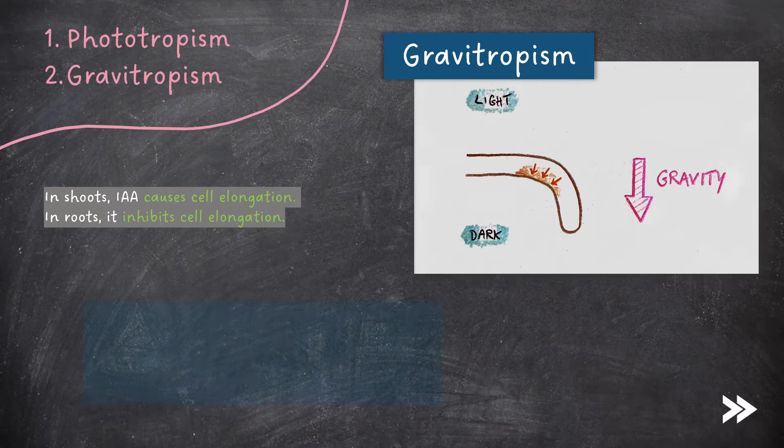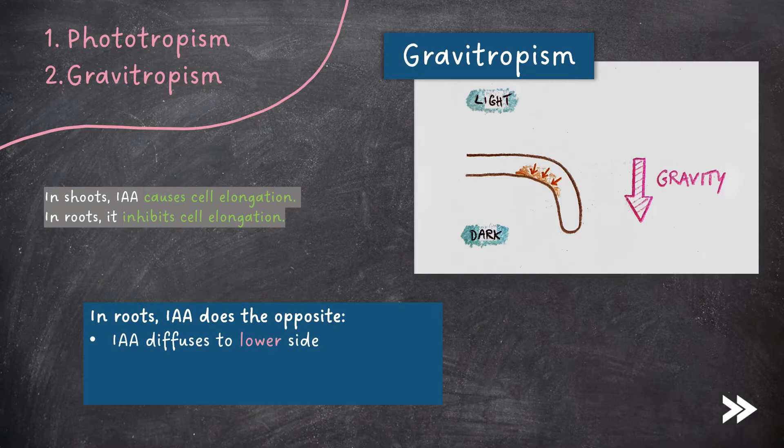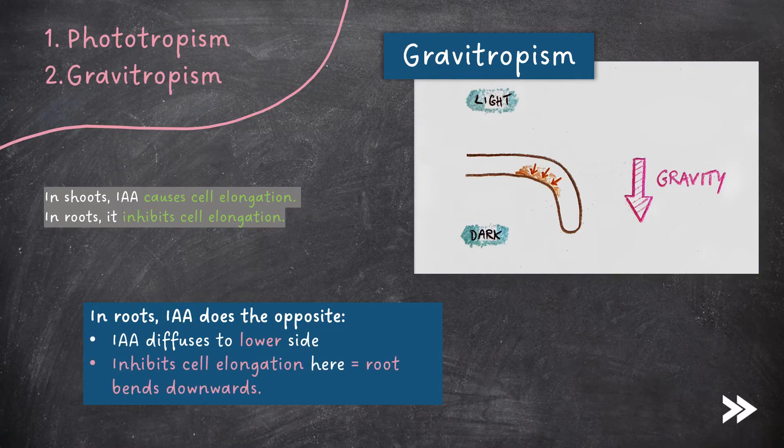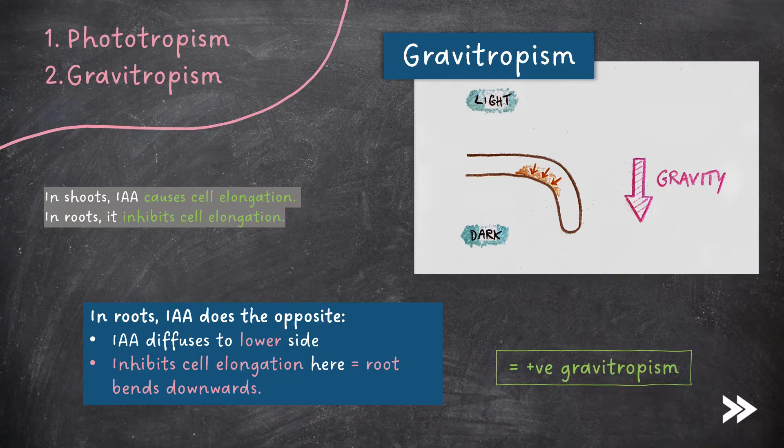As before, in the roots, IAA does the opposite. It diffuses to the lower side and inhibits cell elongation here. Therefore, the root curves downwards, and this is known as positive gravitropism.